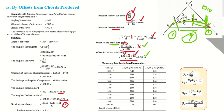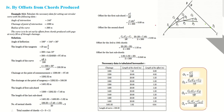We list all the chainages — 1292.52, 1300, 1320 … 1480, 1481.02 — and write the corresponding chord lengths and offsets. The first sub-chord is 7.48 m, the final sub-chord is 1.02 m, normal chords are 20 m each. If you add all the chord lengths together, they should equal the length of curve: 188.50 m.